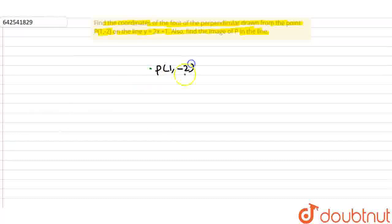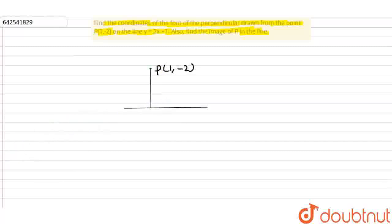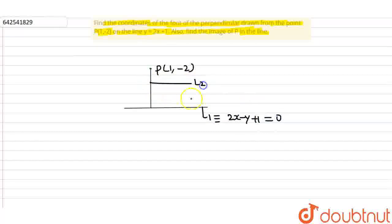Given here, this is point P(1, -2). And this is the given line, that is L1. Now we need to draw the foot of perpendicular from point P to this line. This foot of perpendicular is point M, which is the point of intersection of the two perpendicular lines.